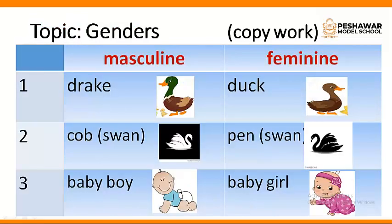Now there are ten masculine-feminine pairs in your midterm course, so write these in your English B copy. The male duck is called drake and the female is duck. The male swan is called cob and the female swan is called pen.